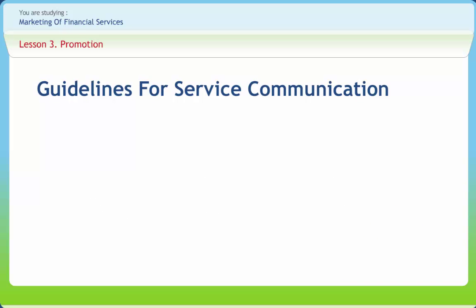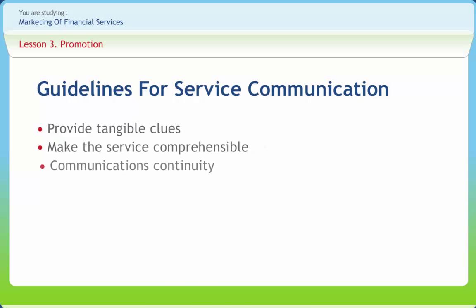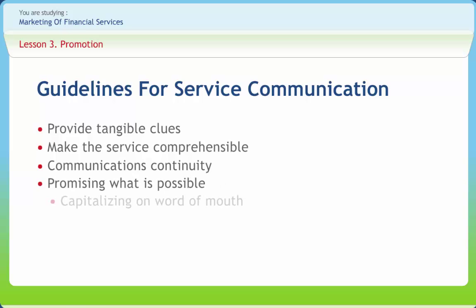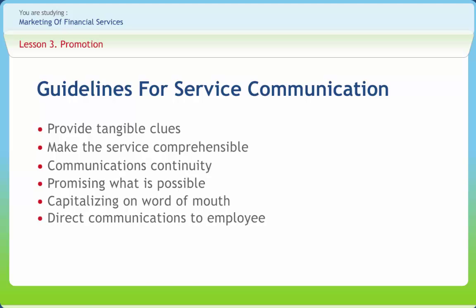Now let's discuss guidelines for service communication. There are six guidelines for services advertising which apply to a wide range of services: provide tangible clues, make the service comprehensible, communication continuity, promising what is possible, capitalizing on word of mouth, and direct communication to employees. Providing tangible clues means providing tangibility to intangible services. By providing brochures and stating responses of satisfied customers, we can make intangible services feel like tangible products. Due to intangibility, it becomes difficult for customers to understand the offer and its benefits. For example, ICICI Bank used the umbrella symbol as part of its safety bonds offer to communicate the offer effectively.